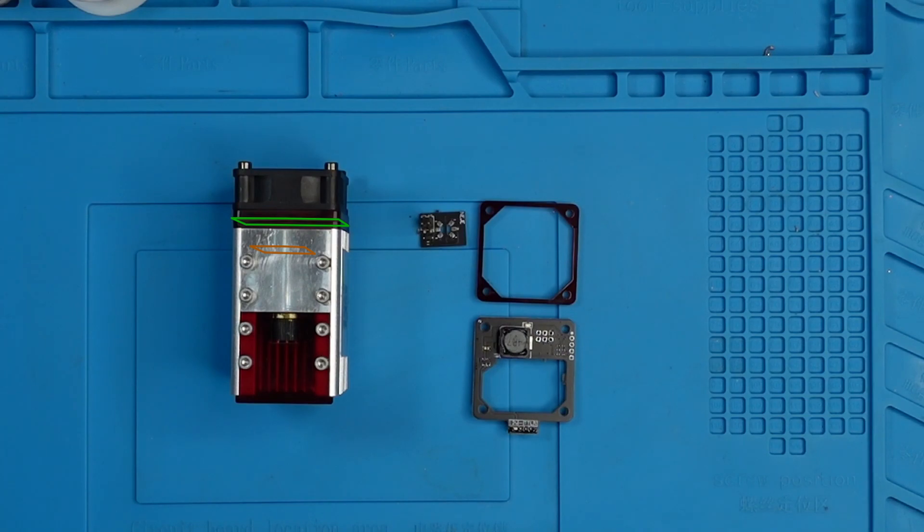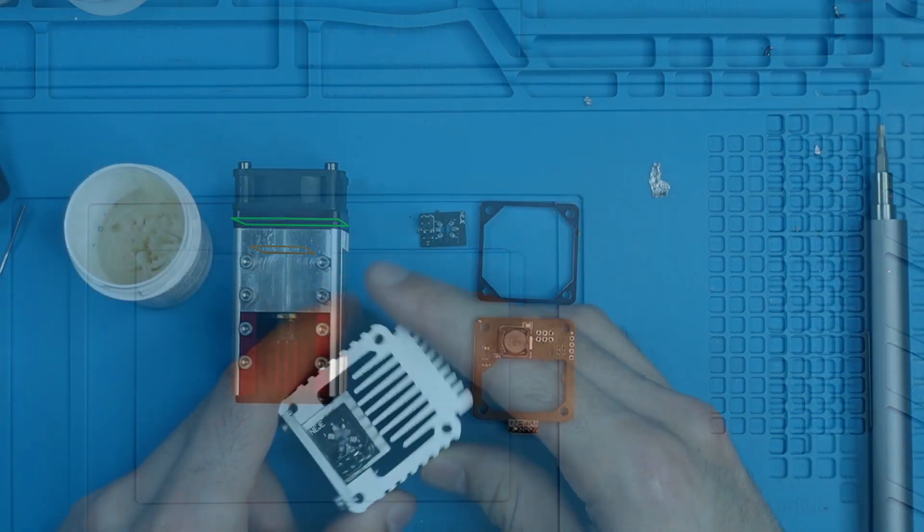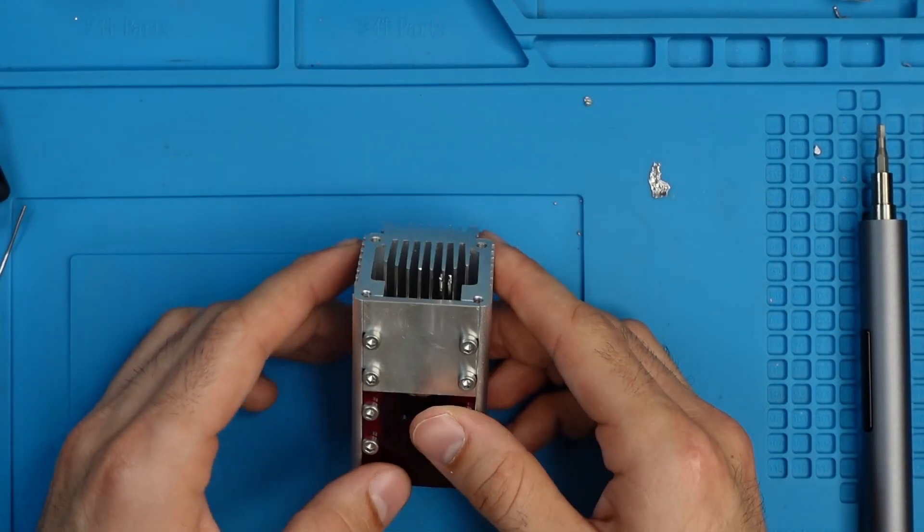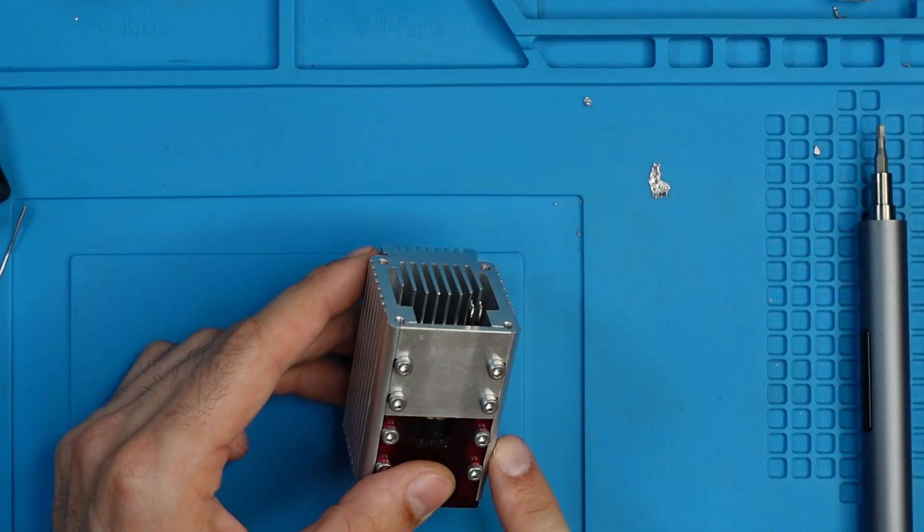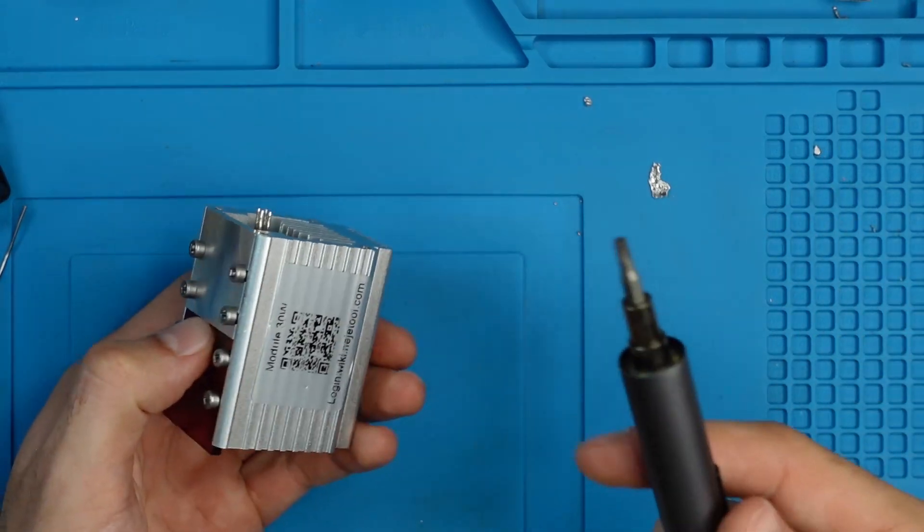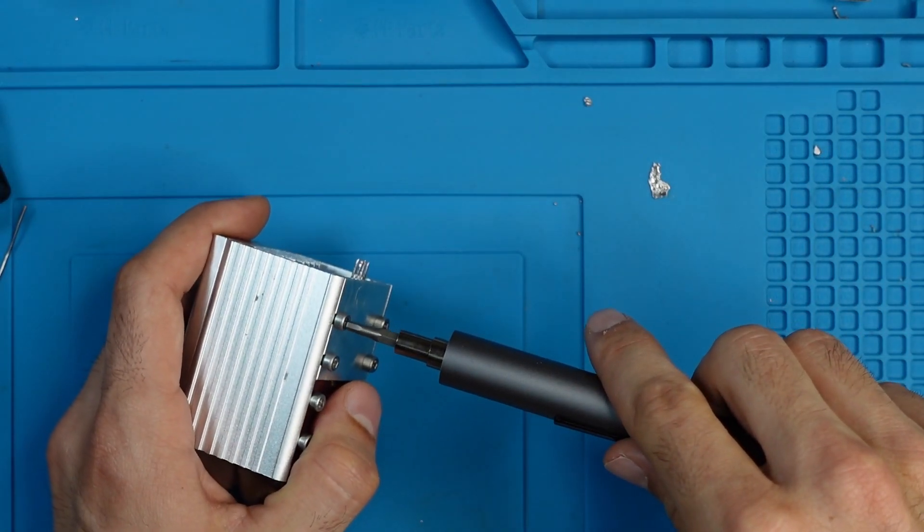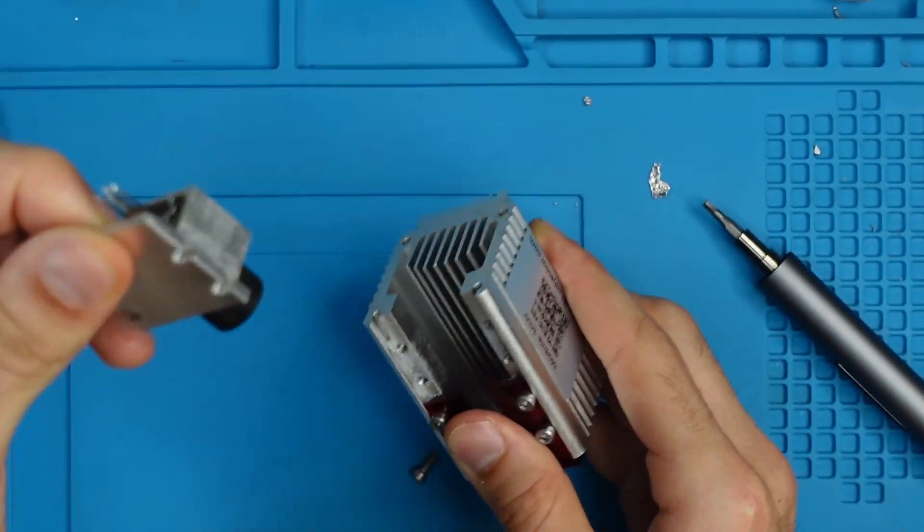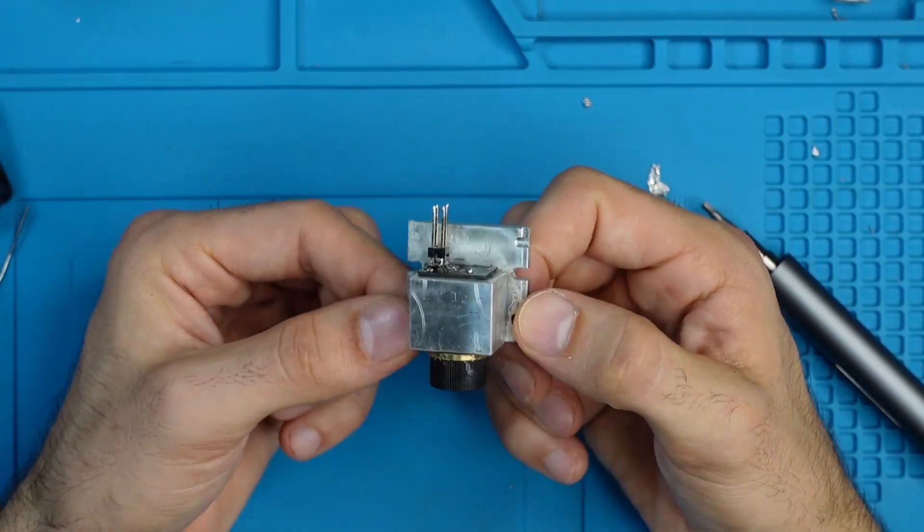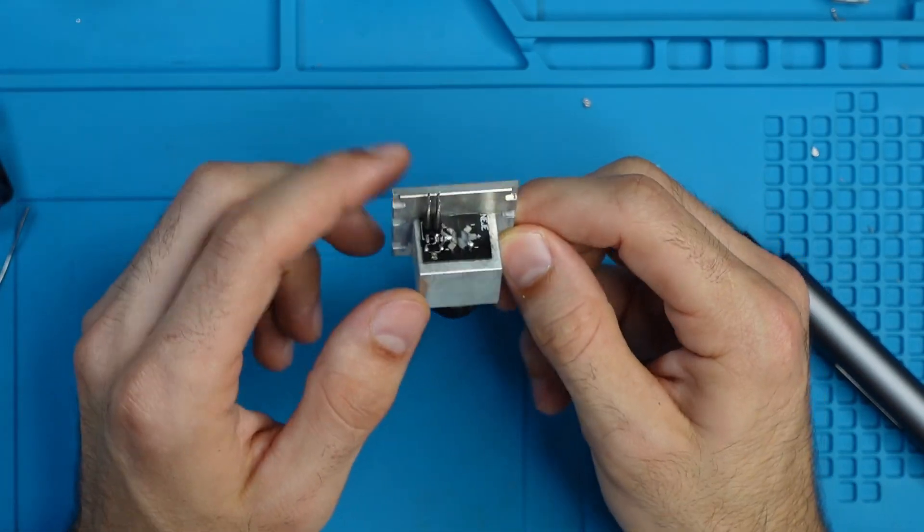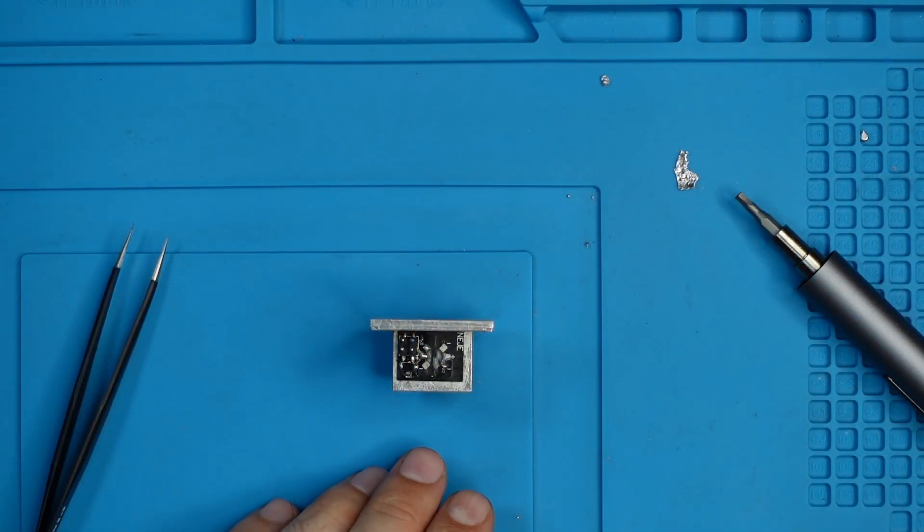Without wasting any more time, let's get into the video. Now, for this board, we will need to disassemble this diode block. You can use the same hexagonal key. Now this is out. This is where the diode sits. Now, I haven't done this yet, so we are going to experience it together.